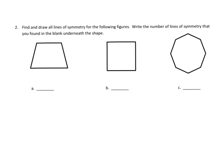So on this, we're asked to find and draw all lines of symmetry for the following figures, and write the number of lines of symmetry that you found. So let's start with this trapezoid here. Now, if we were to draw a line horizontal, we would not get a line of symmetry because the top half would be smaller than the bottom half, and it wouldn't work.